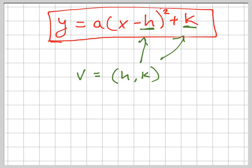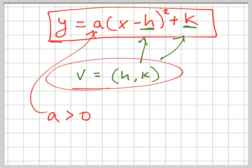And h comma k is your vertex, and a tells you if it opens up. If a is positive, if it's greater than zero, then the graph opens upward. If a is less than zero, the graph opens downward.